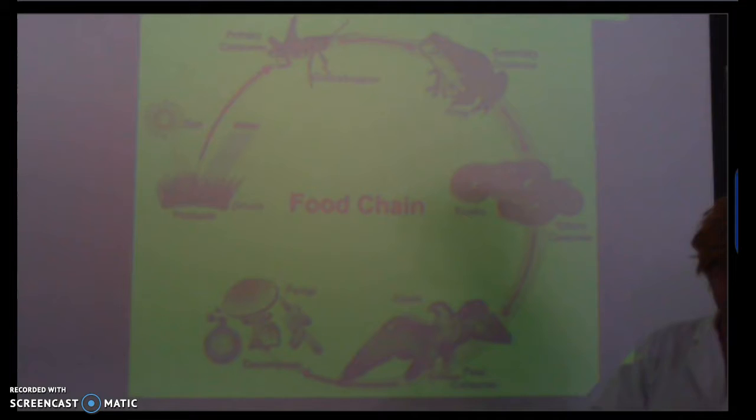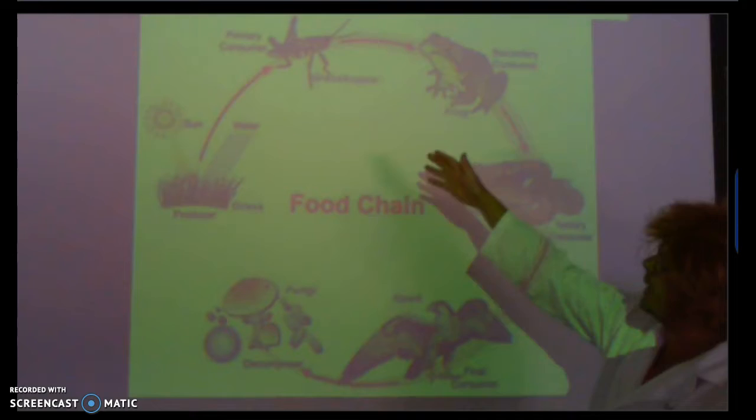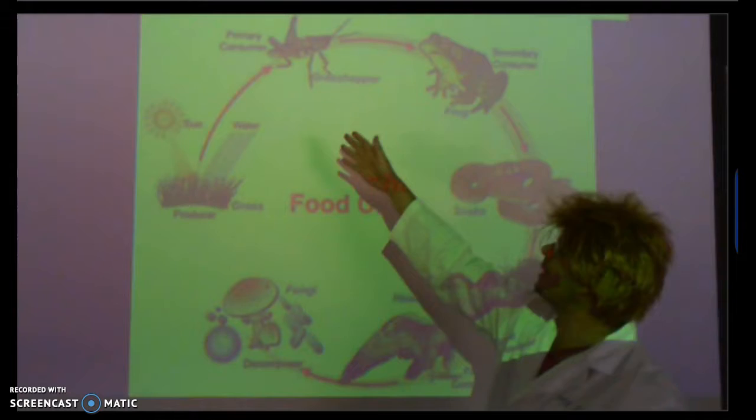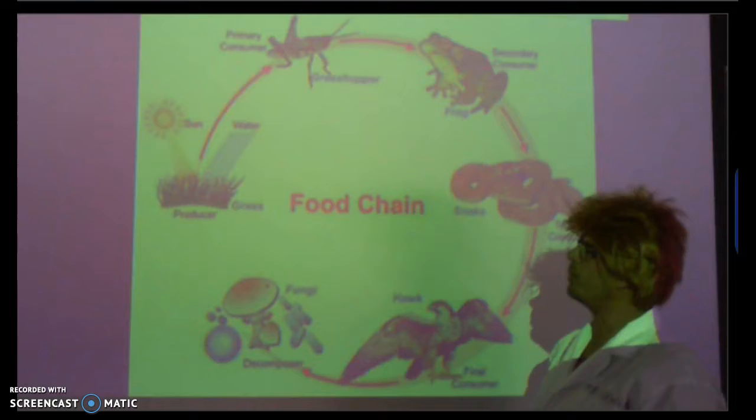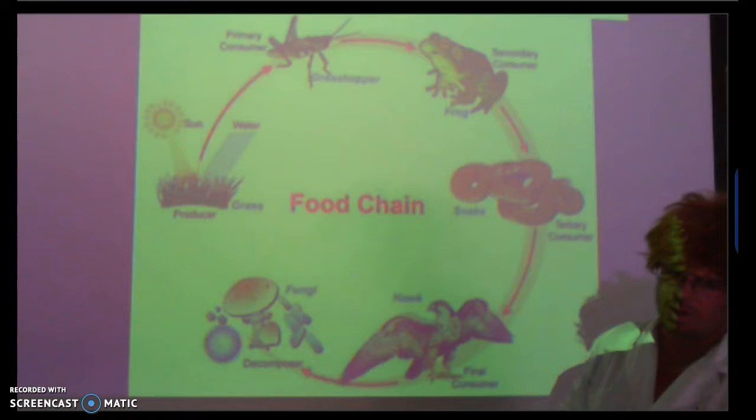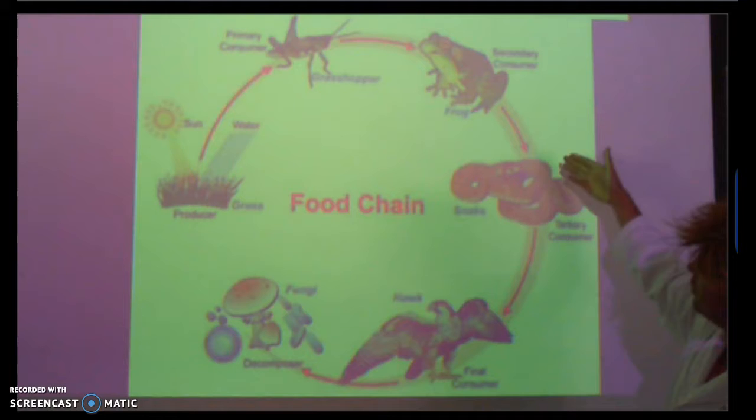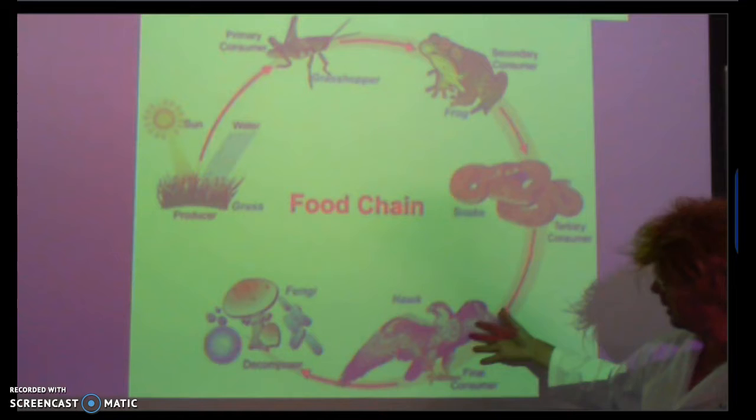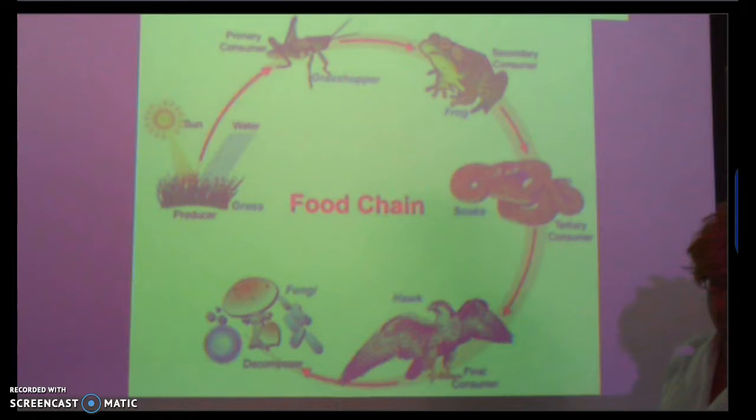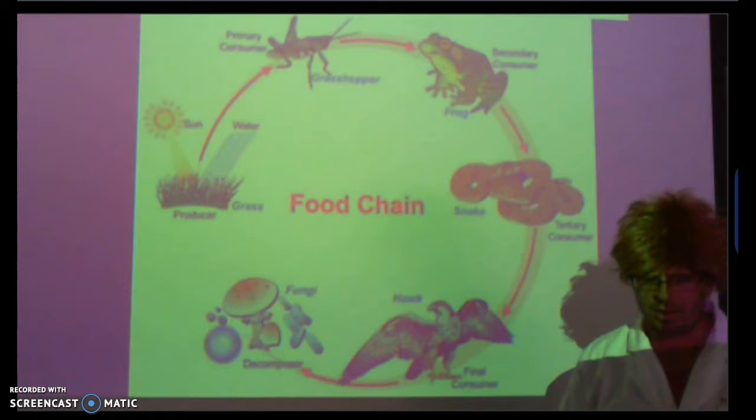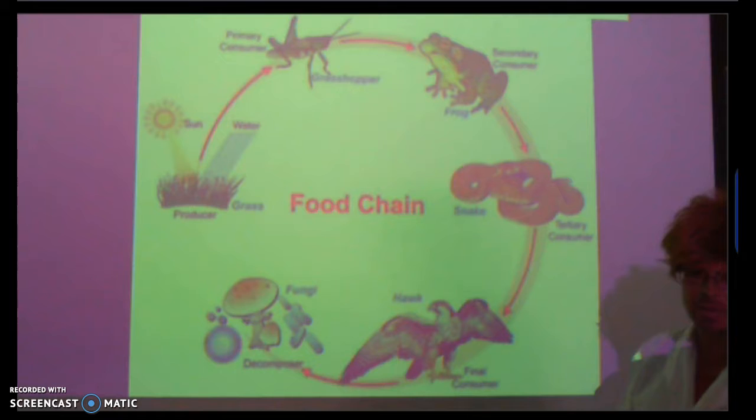If we're looking at the food chain now, we've got the producer, which is the grass in this instance. A producer is something that can make its own food. The primary consumer is our grasshopper. We go to a secondary consumer, the frog, then our snake, a tertiary consumer. We have our hawk, which is the final consumer or apex predator. Then we have fungi, which are decomposers—once any of these have died, the fungi will decompose them and return them to their basic elements.